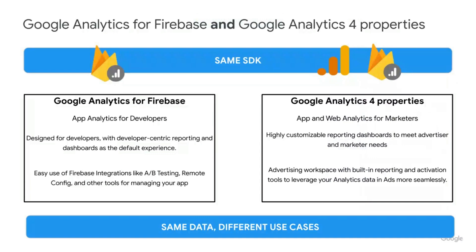Google Analytics for Properties, on the other hand, are really meant for more of your marketers and your analysts looking at your app and web data together. They're highly customizable with reporting dashboards that help to meet advertiser and marketer needs. There's an advertising workspace with built-in reporting and activation tools to help you leverage your analytics data in ads much more seamlessly. In essence, this is the same data, but different use cases.